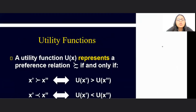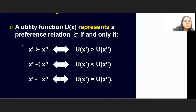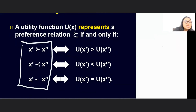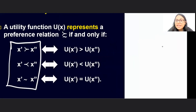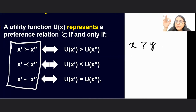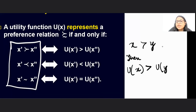We already understand that two bundles can be represented in the form of preferences. What we are now going to do is convert the concept of preferences into the concept of utility. We are going to say that if X is preferred over Y — we have two bundles X and Y, and X is preferred over Y — then the utility I get from X should be greater than the utility I get from Y.